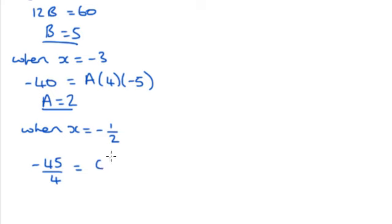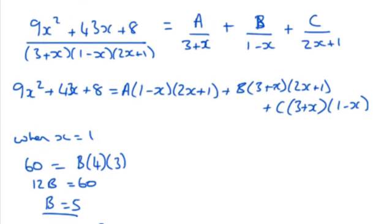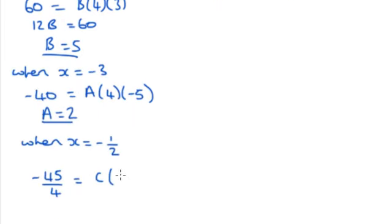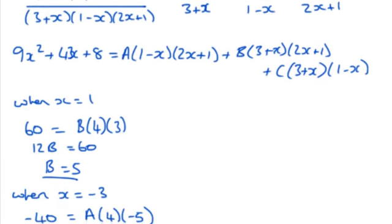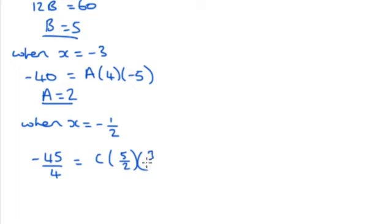Right hand side, we know we're going to have the C term left, and that's going to be 3 - 1/2, which is going to be 5/2, times by 1 minus -1/2, which is going to be 3/2. So that will give us -45/4 is equal to 15C/4. So C must be -3.